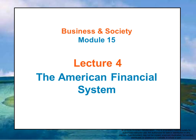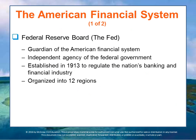In this lecture, we'll go into more detail about the American financial system. The guardian of the overall financial system in the U.S. is the Federal Reserve Board, or the Fed, as it is commonly called. It's an independent agency of the federal government that was established in 1913 to regulate the nation's banking and financial industry. The Federal Reserve System is organized into 12 regions, each with a Federal Reserve Bank that serves its designated area.